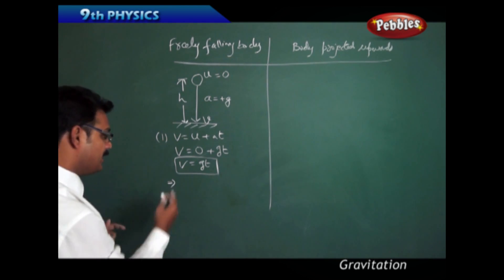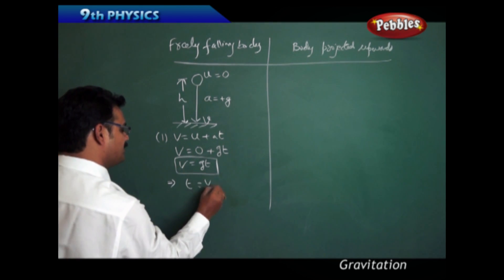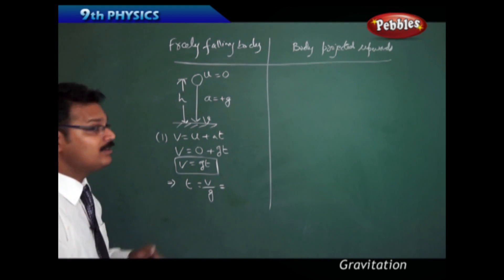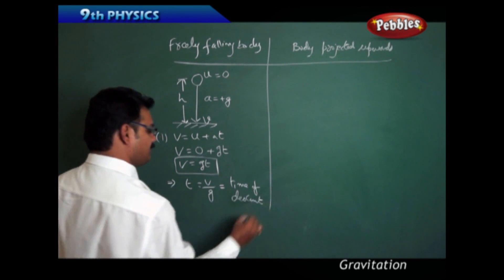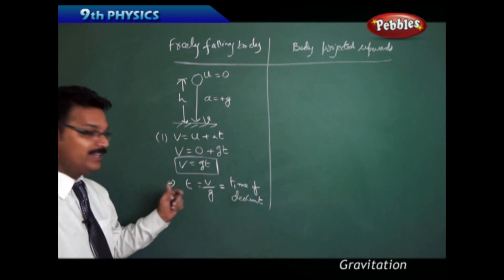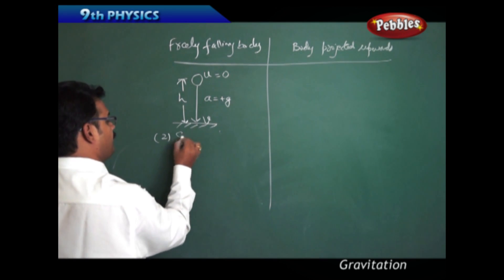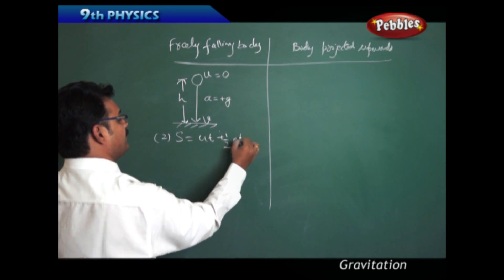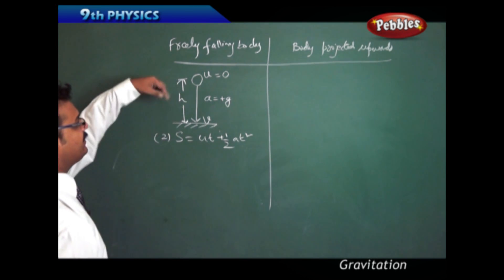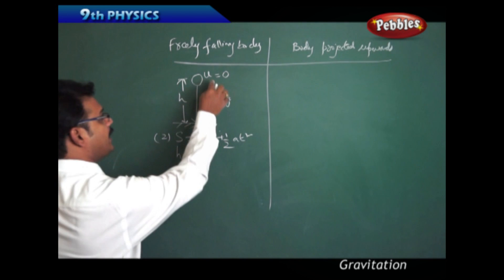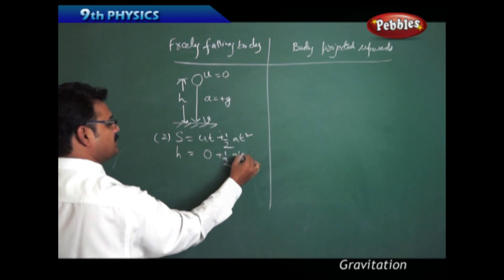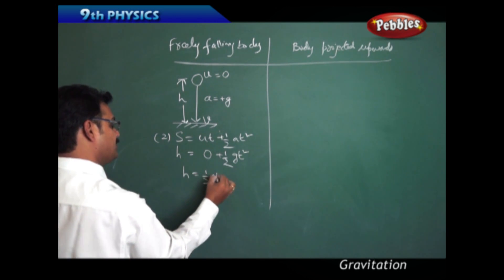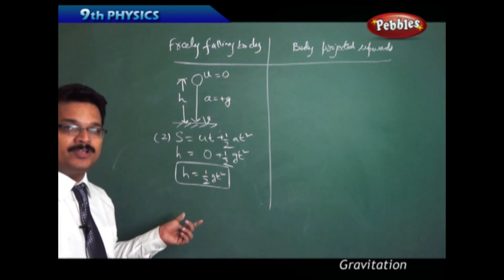From this formula we can find the final velocity of a freely falling body before touching the ground. A modified form gives T = V/G, which is called time of descent — a very important formula in numericals. For the second equation, S = UT + ½AT², the distance travelled is H. Since U = 0, we get H = ½GT².